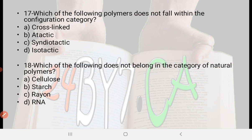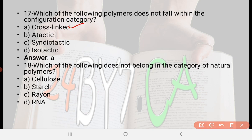Next: Which of the following polymers does not fall within the configuration category? Option A: cross-linked, option B: atactic, option C: syndiotactic, option D: isotactic. The right answer is option A, cross-linked.